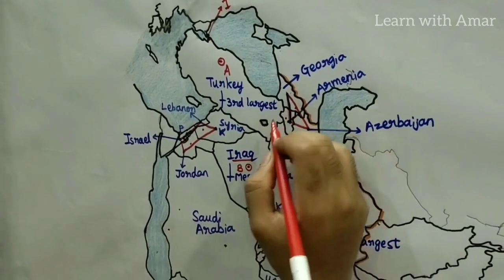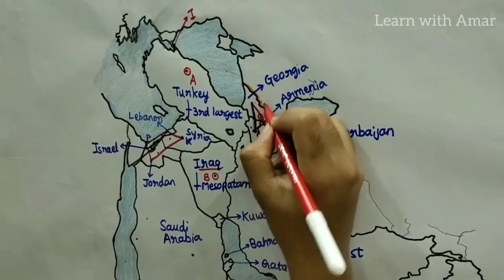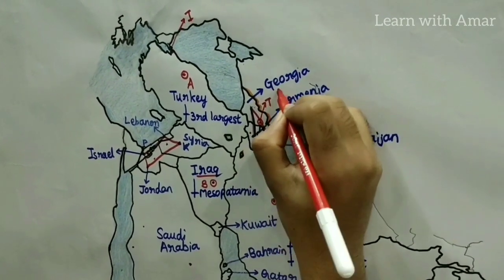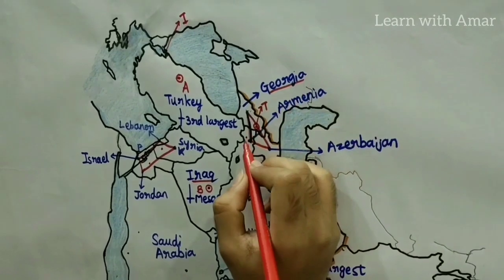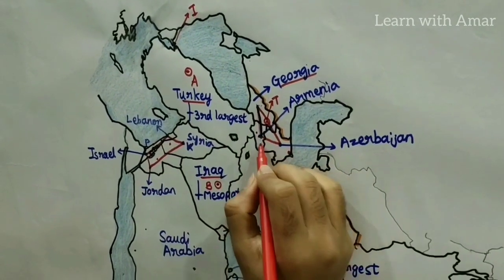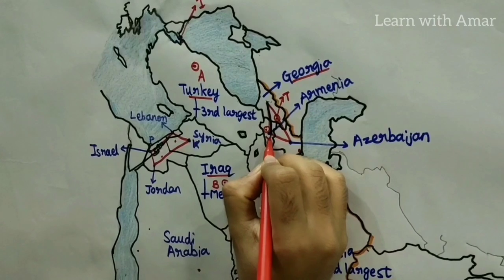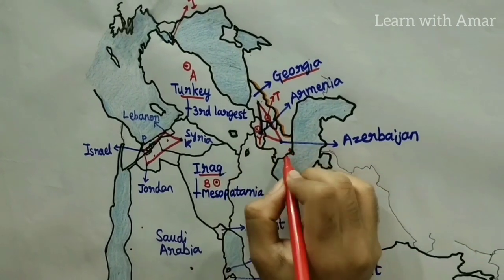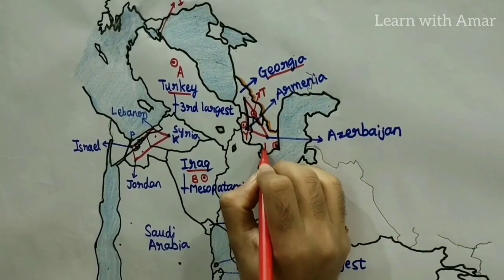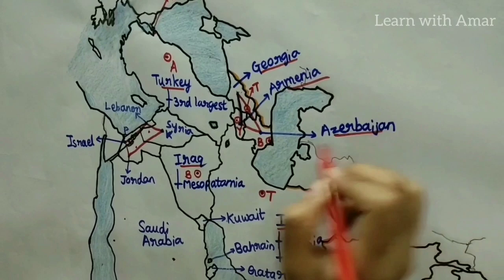Let's come to the second part. Georgia's capital city is Tbilisi. In Armenia, the capital is Yerevan. And Azerbaijan's capital city is Baku.